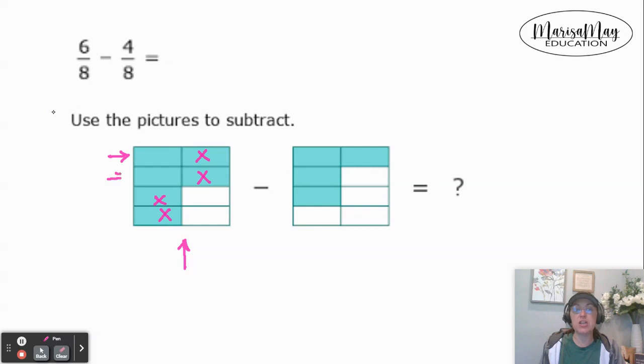I have 1, 2 left. That leaves me with 2 eighths. Now, of course,